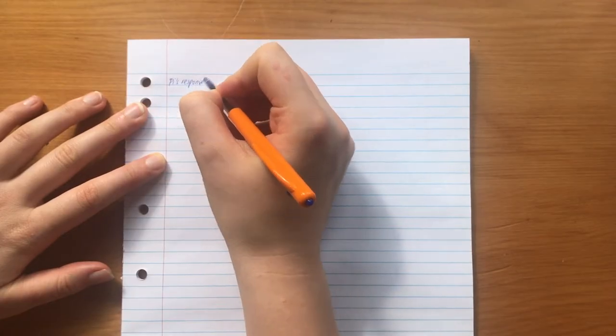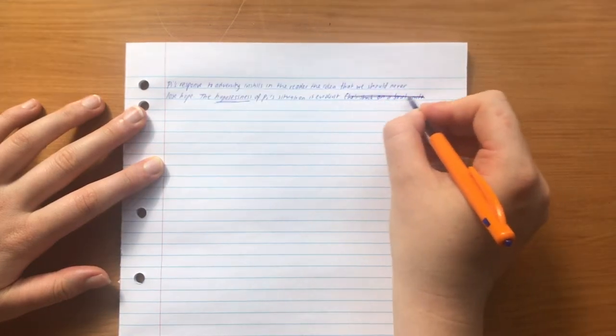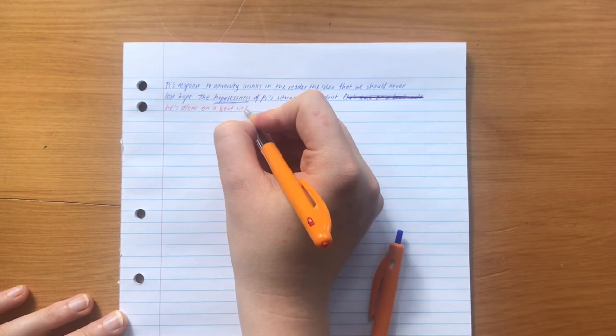Once you're feeling confident with the paragraph, write it out on paper. Try to avoid looking at your computer screen, but if you forget a part refer to the original document and write out that part in a different color pen or highlight it with its own color.